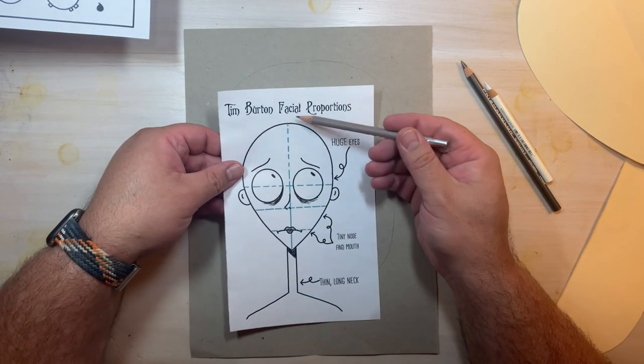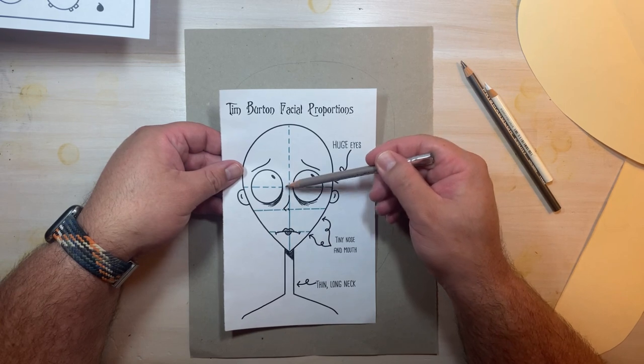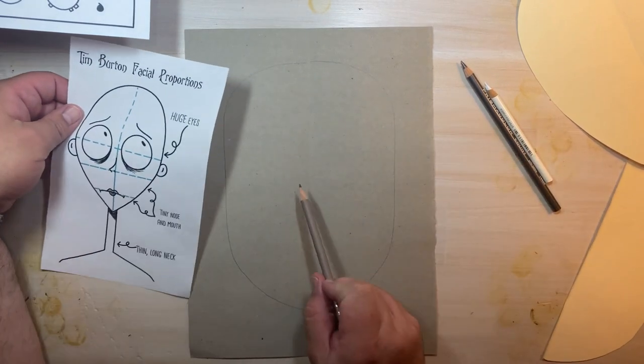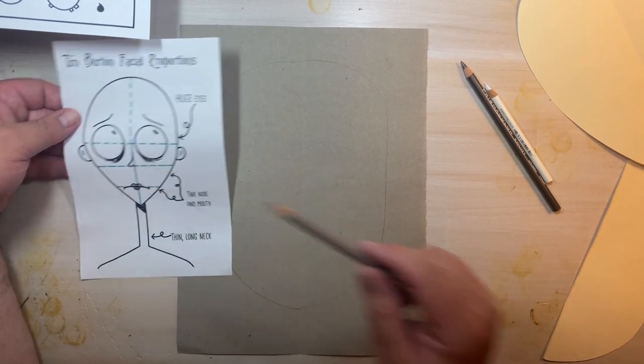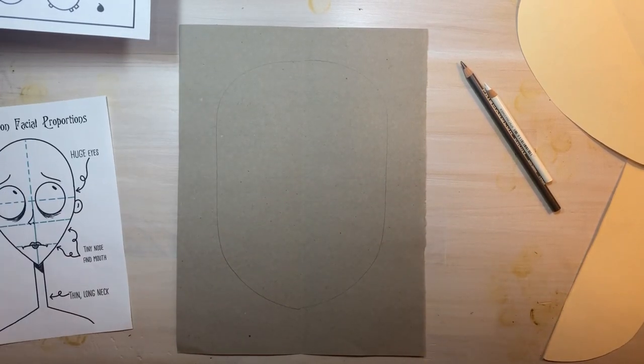Looking at my reference guide I can see that halfway down the head is where I will have the eyes. I might draw a very thin guideline to sort of get me started.